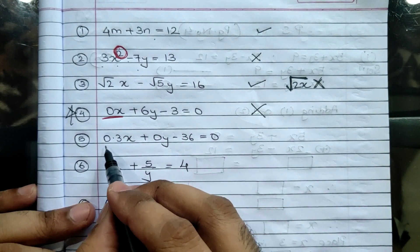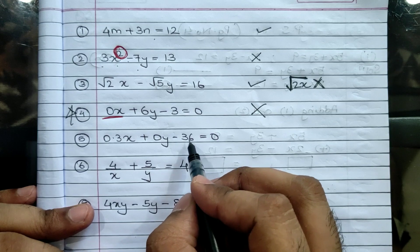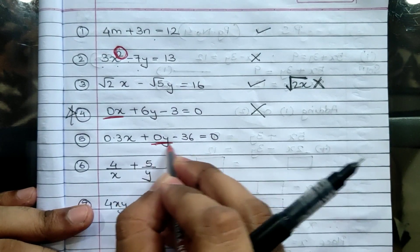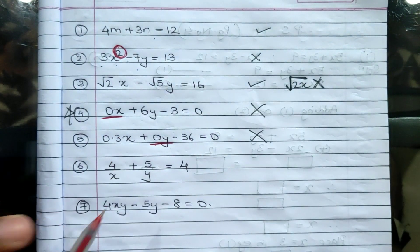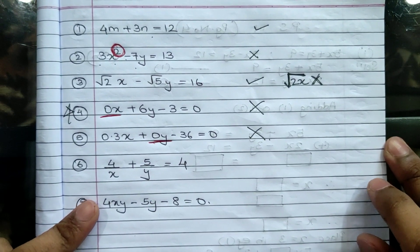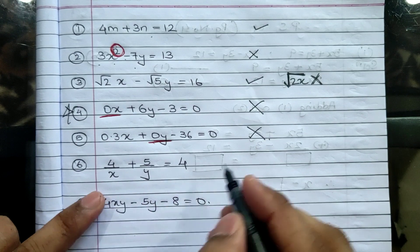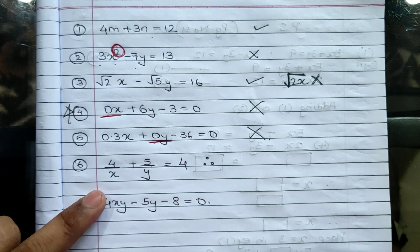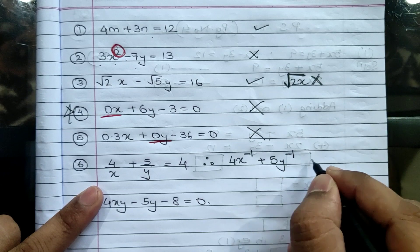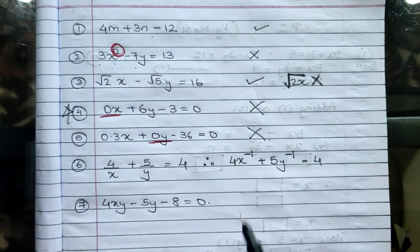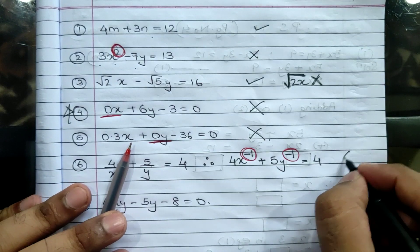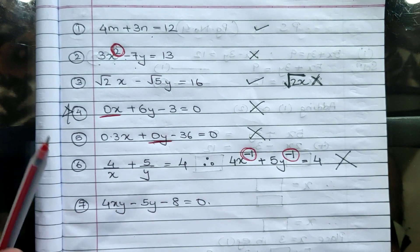Fifth: 0.3x + 0y − 36 = 0. Is this a linear equation in two variables? No — because B = 0, which is not allowed. Sixth: 4/x + 5/y = 4. Students often get confused here. This can be rewritten as 4x⁻¹ + 5y⁻¹ = 4. The power of x is −1 and the power of y is −1, not 1. So since the degree is not 1, this is not a linear equation in two variables.